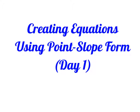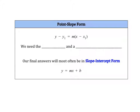Hi everybody! Today we are going to learn how to create equations using what's called point-slope form. Everything we've been doing up until now has used slope-intercept form — y equals mx plus b. For this form we needed two things: the slope and the y-intercept. But what happens if we don't know what the y-intercept is? That's a very specific point, so there's a different form we can use, called point-slope form.